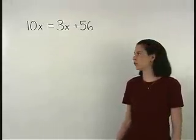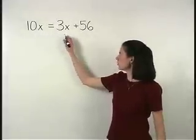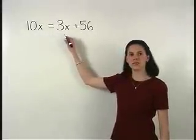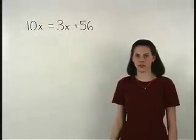So how do we put our terms 10x and 3x together if they appear on different sides of the equation?